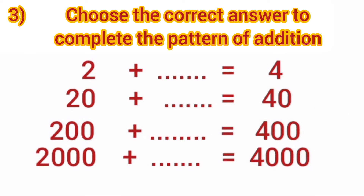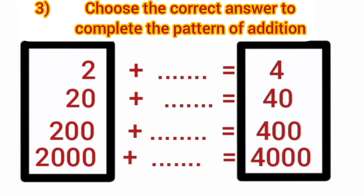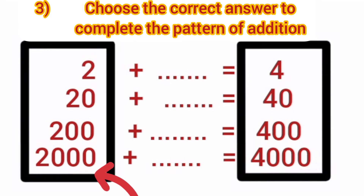Dear students, our next question is: choose the correct answer to complete the pattern of addition. See carefully the pattern of addition. On this side, we have numbers 2, 20, 200 and 2000. On the other side, we have numbers 4, 40, 400 and 4000.